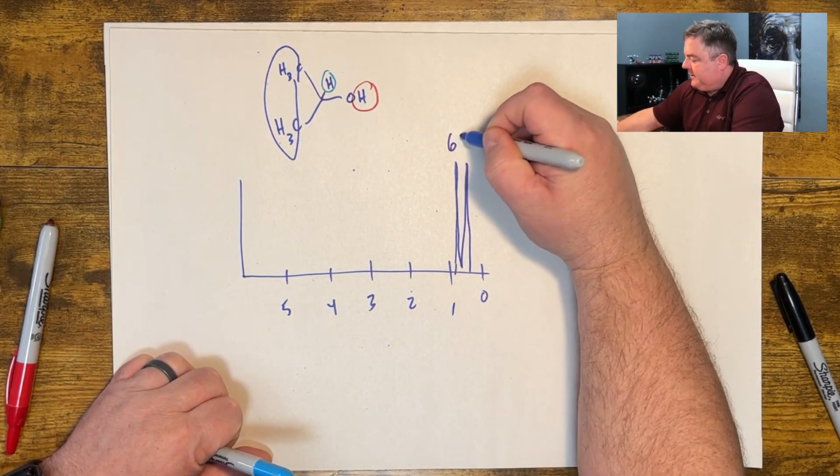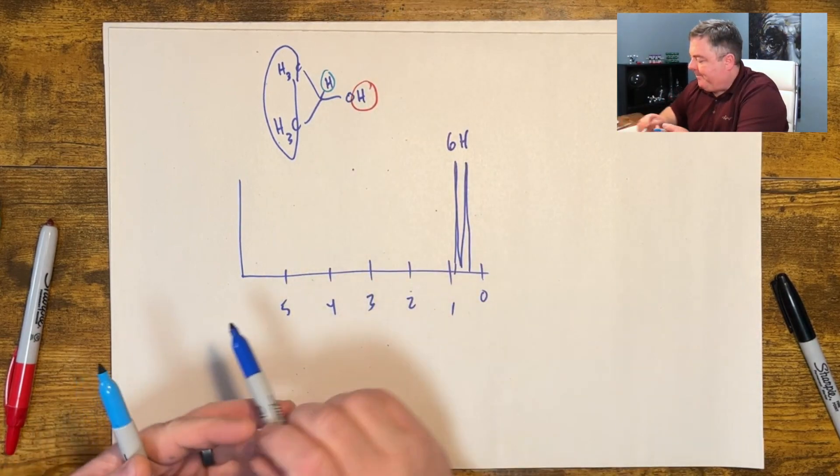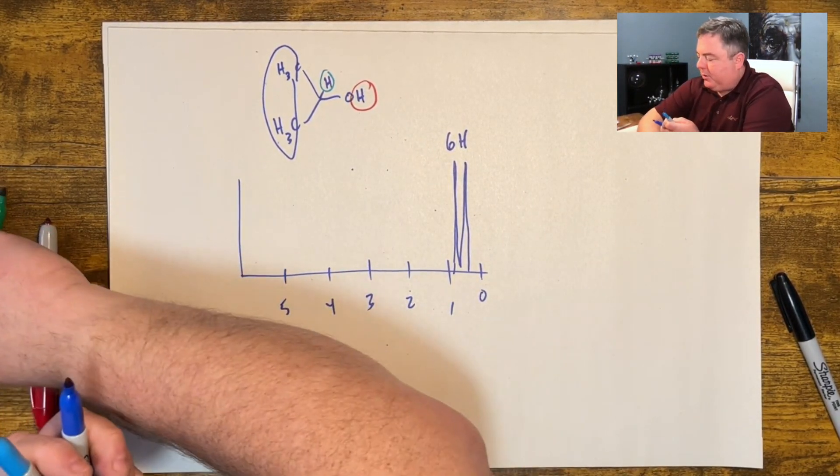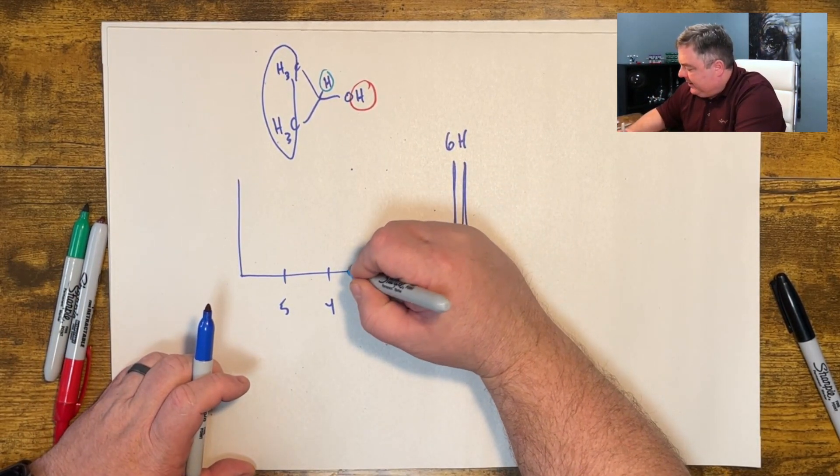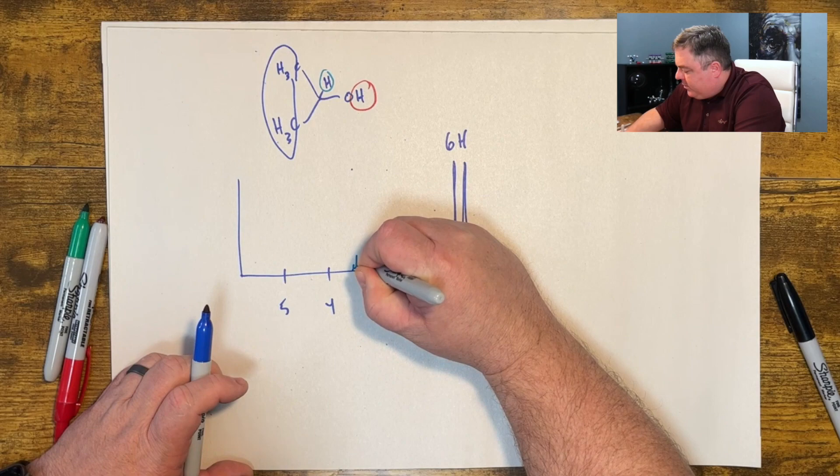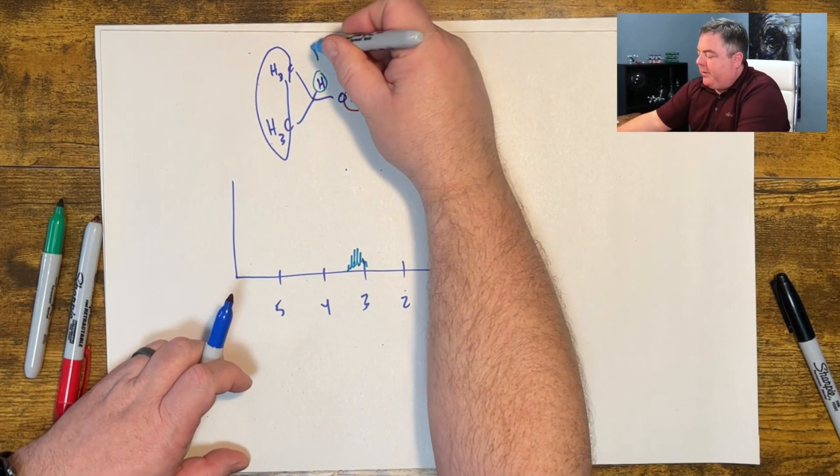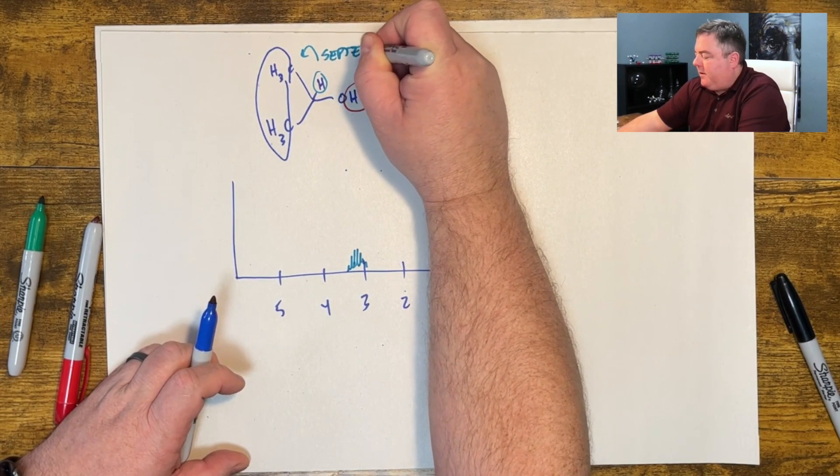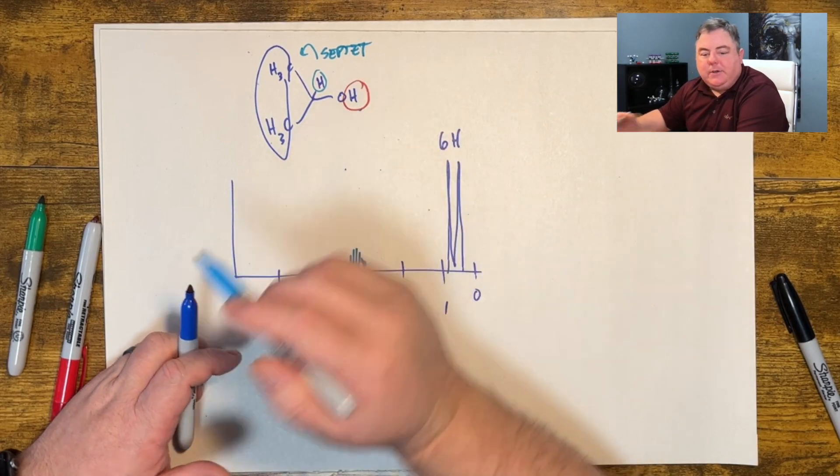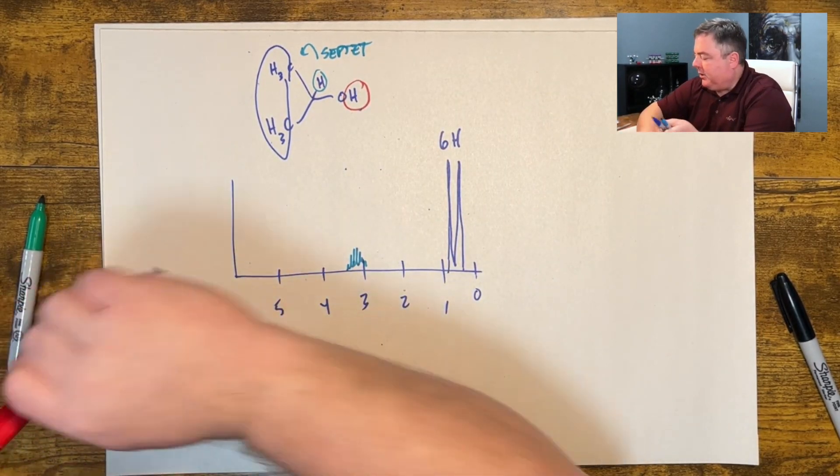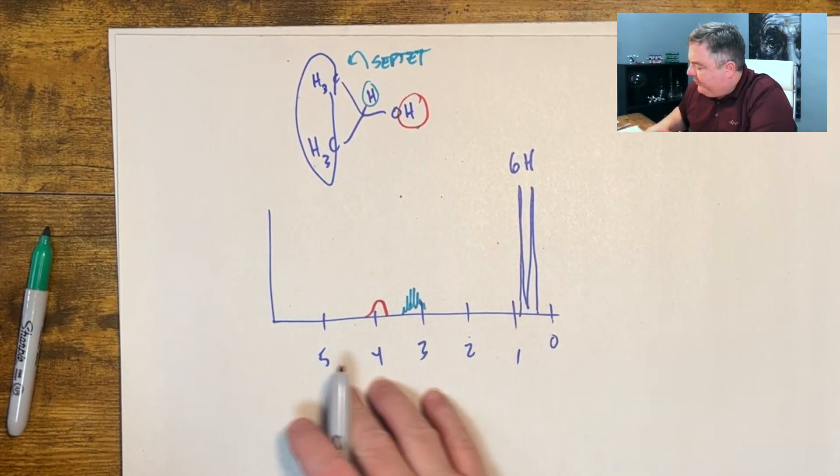So if we run the spectrum, you end up getting a big doublet down here. These six hydrogens, the blue ones, and they're a doublet because there's one hydrogen neighbor. And this one hydrogen ends up looking something like this: three, four, five, six, seven. So you might think it's a septet because it's next to six hydrogens over there. And if this hydrogen falls on or off, it might be a blobby looking peak like that. So a lot of times this is what this NMR would look like.